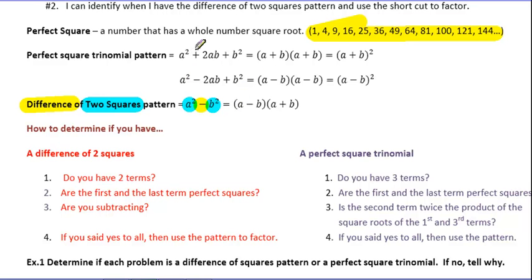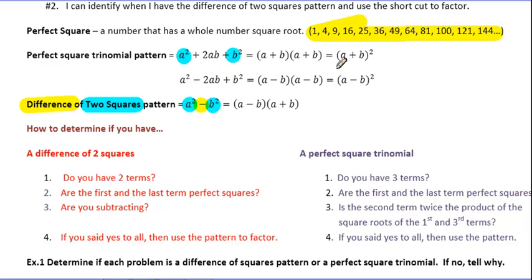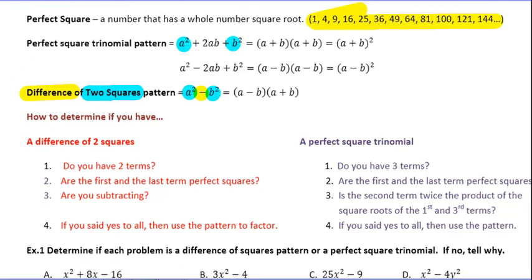Perfect Square Trinomials happen when you have a Perfect Square in front and in back, just like Difference of Squares. And in the middle, the middle term is twice the product of the square roots that you have there, and it fits this pattern. If it's a plus sign, it's (A plus B)(A plus B). If there's a minus sign, it's (A minus B)(A minus B), and we could also write it as a square using an exponent.